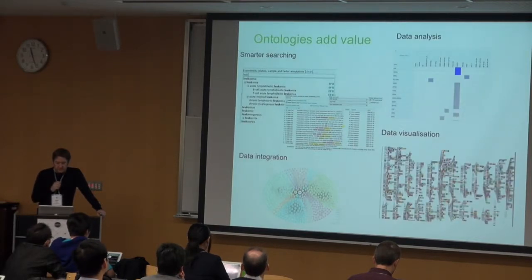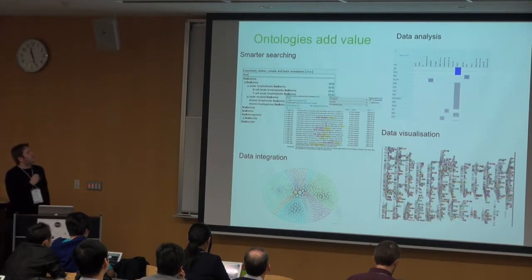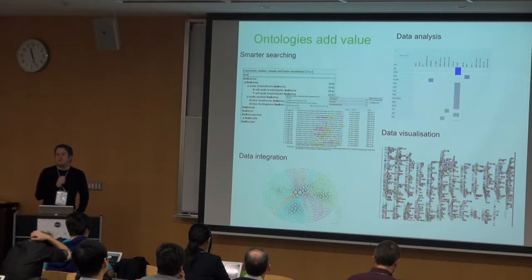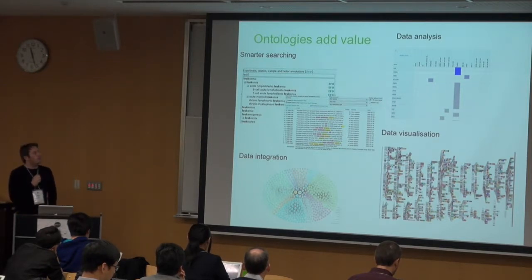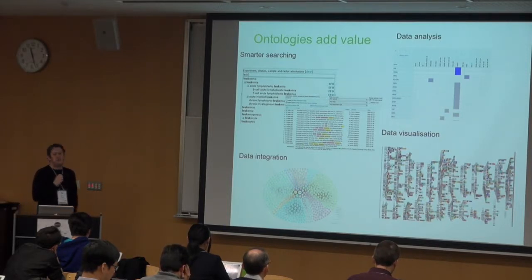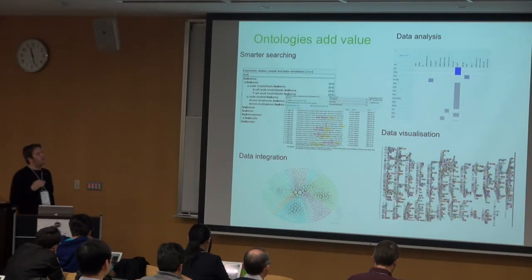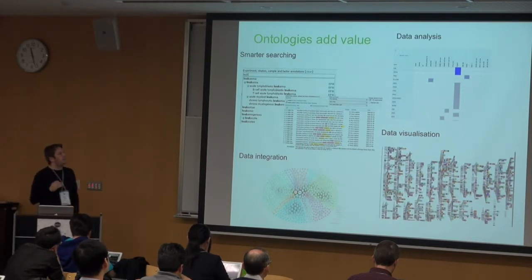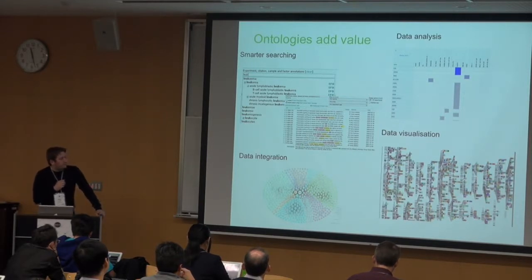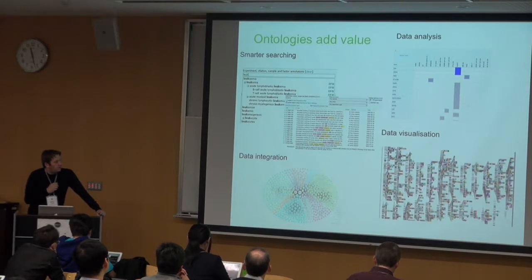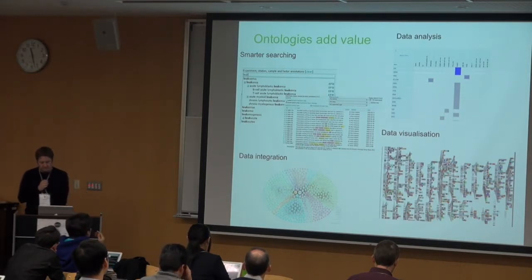Here's the range of areas where we utilise ontologies at EBI: primarily for smarter searching — query expansion and faceted search; data analysis — enrichment analysis using the Gene Ontology and now disease enrichment too; data integration through our RDF work; and data visualisation. This diagram of the latest GWAS catalogue is driven entirely from an RDF and ontologies back end, allowing us to develop novel visualisations.